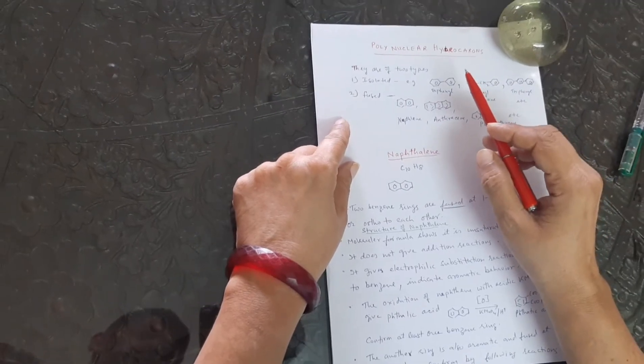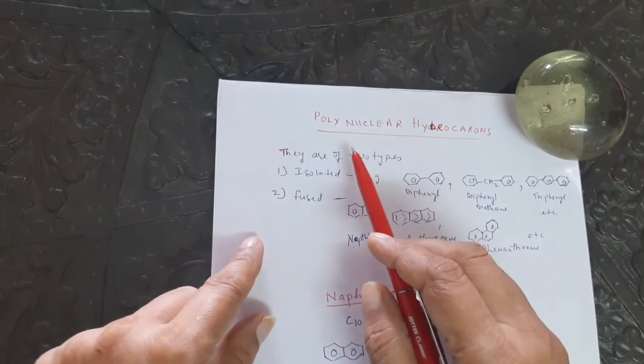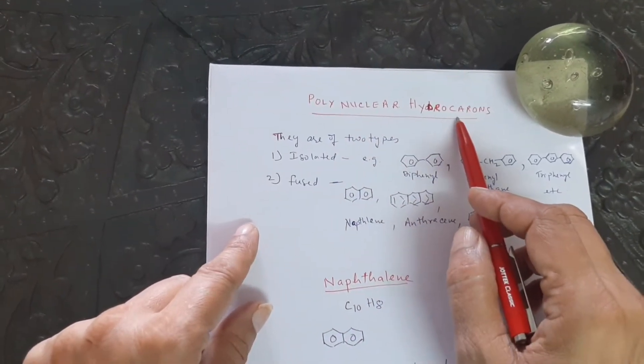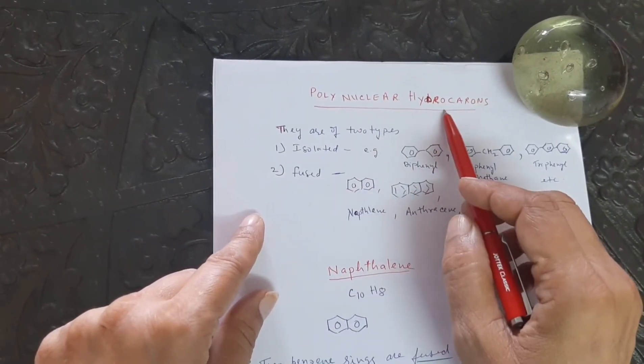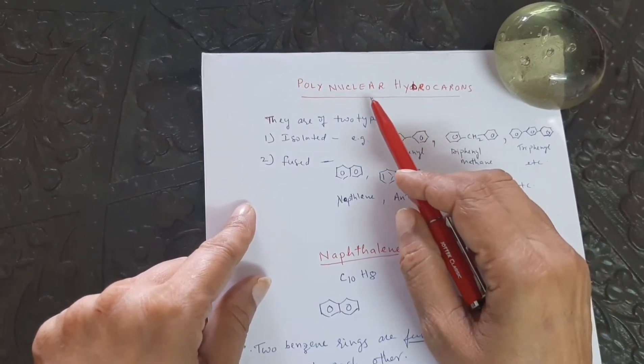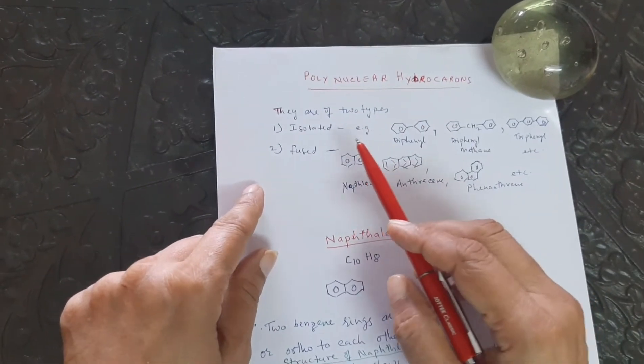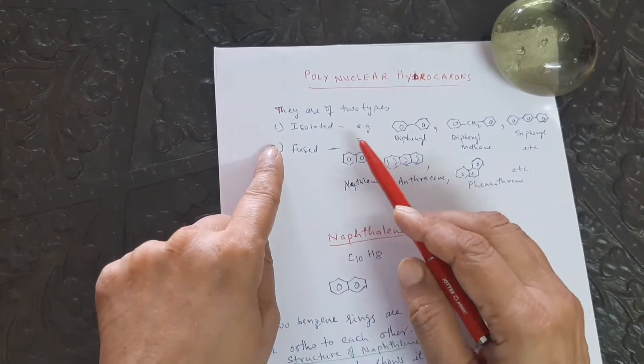Today I will teach 2nd year organic chemistry chapter, that is polynuclear hydrocarbons. The polynuclear hydrocarbons means the hydrocarbons which have aromatic rings more than 1, that is more than 1 aromatic rings.